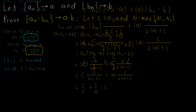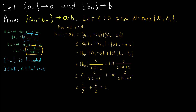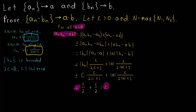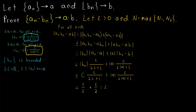We've shown that for an arbitrary ε > 0, we can find a number N such that every term of our sequence after the Nth term is within ε of a·b. Thus, if aₙ converges to a and bₙ converges to b, then aₙ·bₙ converges to ab. The product of convergent sequences converges to the product of their limits.